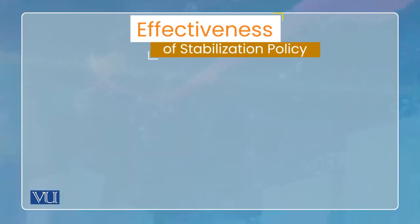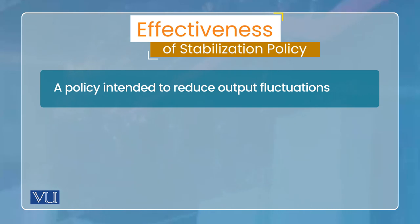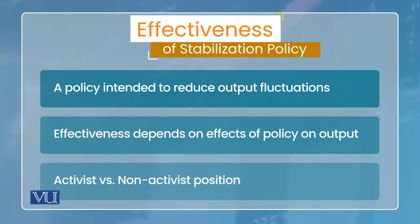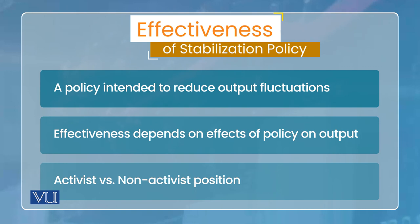Now we will see what policy the policy maker can adopt. This is the last lecture where we had a framework on effectiveness. Now we have practical policy to talk about. In policy, we have two policies: one is the stabilization policy and the anti-inflationary policy. This lecture, our focus is on these.